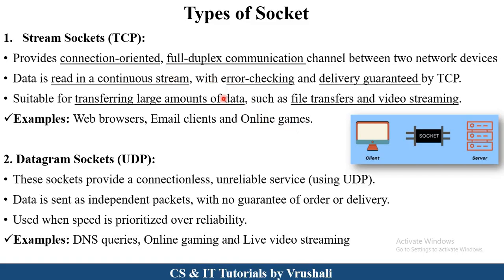Stream socket is used when large amounts of data and accurate delivery are required. On the other side, there is a datagram socket, which is a connectionless service. There is no guarantee of order or accurate delivery at the receiver side, so it is an unreliable service provider. Datagram socket is generally used when speed has more priority over reliability — for example, live video streaming, live conferences, online video sessions, and online gaming, where speed is more important than reliability.